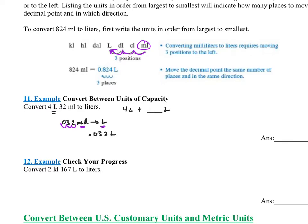So what is 4 liters and 32 milliliters? It's 4 liters plus 0.032 liters, which would be 4.032 liters. That would be the conversion in terms of liters.